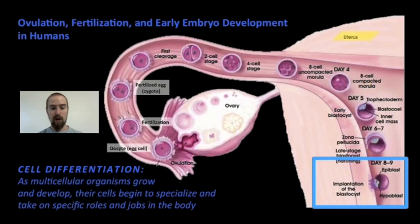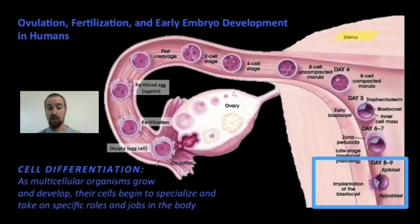That's because this ball of cells has no body systems of its own. It doesn't have a nervous system, a digestive system, a muscular system, or any other systems. It doesn't even have nerve cells, or muscle cells, or specialized cells of any kind. All the cells that make up this embryo are completely generic and do not have any special functions or features.